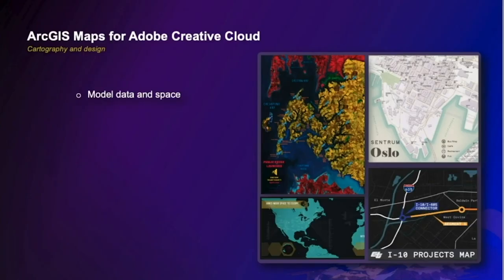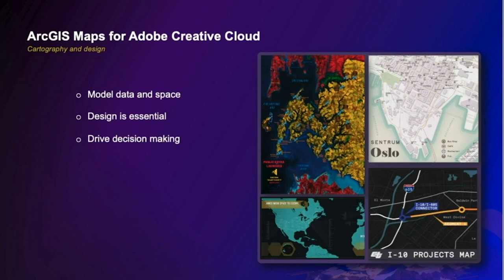Let's talk briefly about cartography and design. Modeling and placing data in geographic space alone is not adequate to make a compelling map — design is a key descriptor when thinking about cartography. A map that evokes a reaction and clearly conveys its purpose and story to its readers drives critical conversations and decisions. Such maps demonstrate design principles such as visual hierarchy, contrast and balance in color, use of texture, and even motion to draw the reader's attention to what is most important.